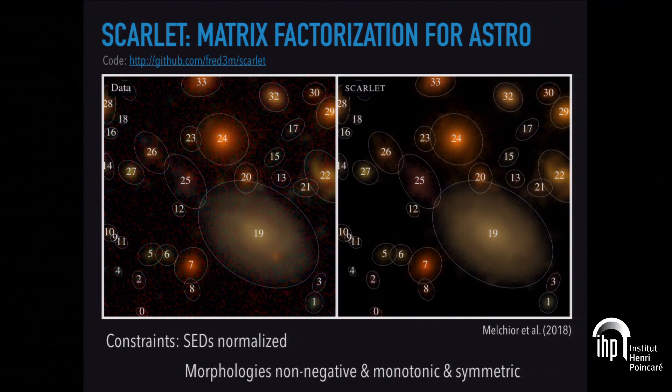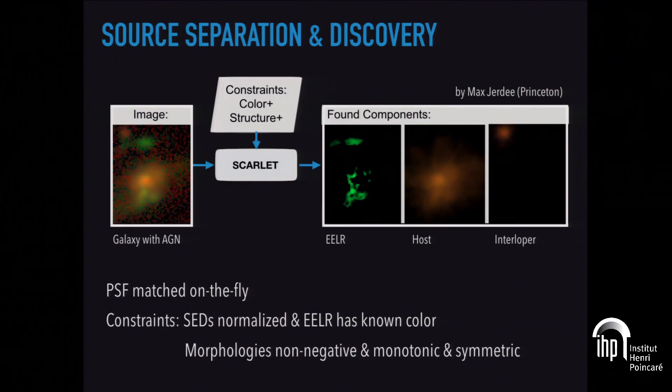This is where networks could be incredibly useful. However, we demonstrated that this scheme outperforms the existing deblender that LSST implemented by a sizable margin. I still believe that there is some, quite a bit of room for improvement. But you can do more with that. Here we have a situation that a student, Max Jurdi, investigated. It is a galaxy with an AGN in the center. The AGN creates a jet. The jet basically ionizes the material and interacts with the ambient material and creates this extended emission line region.